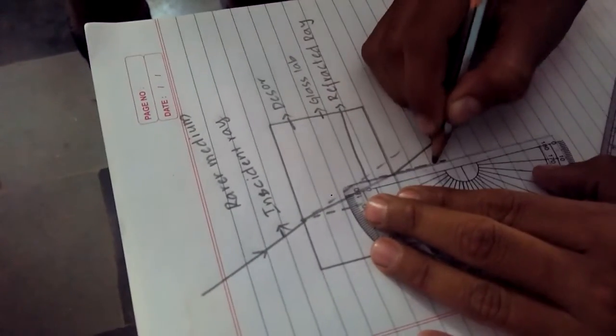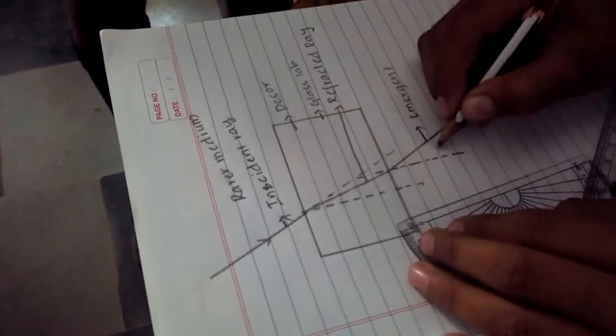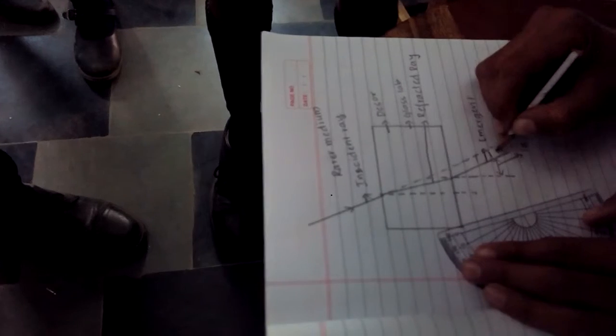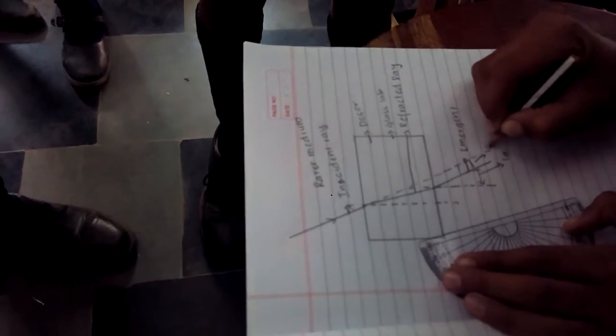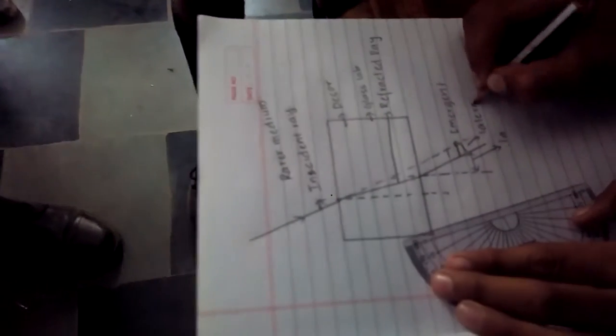And as you can see, there is a bit gap between the normal and the light ray, emergent ray. This gap is called lateral shift because there is a shift in between of these both. It is called lateral shift.